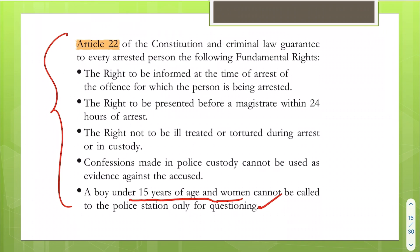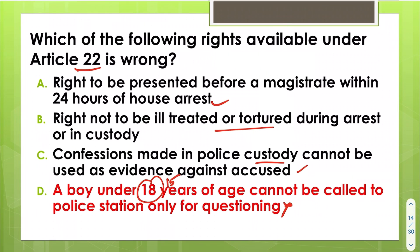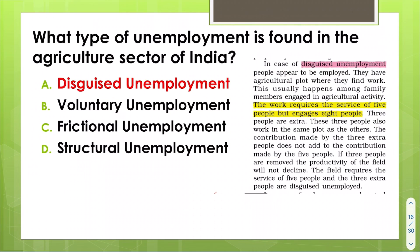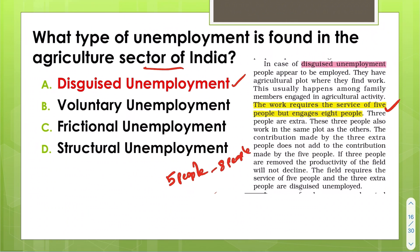The type of unemployment found in the agriculture sector of India is disguised unemployment. In the NCERT example, if five people are required but eight people are working there — more than required — that is disguised unemployment.